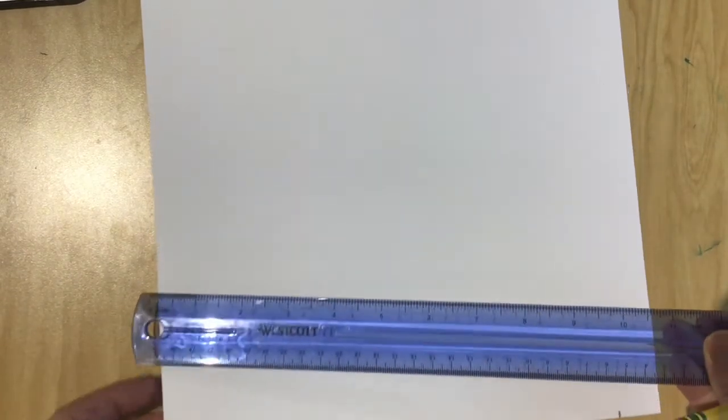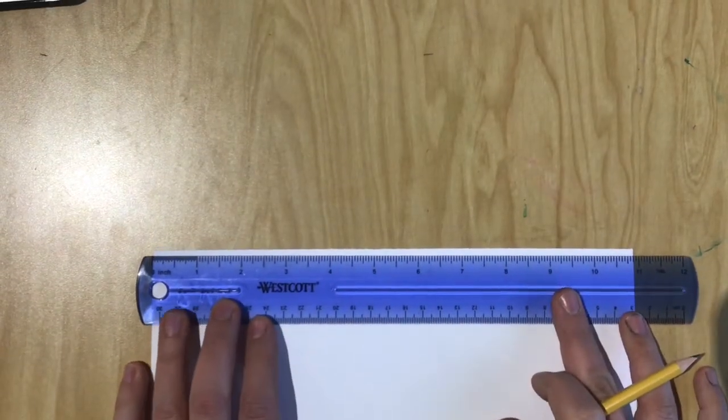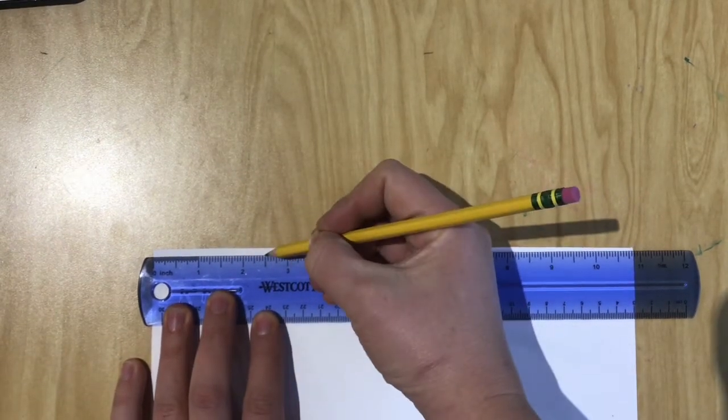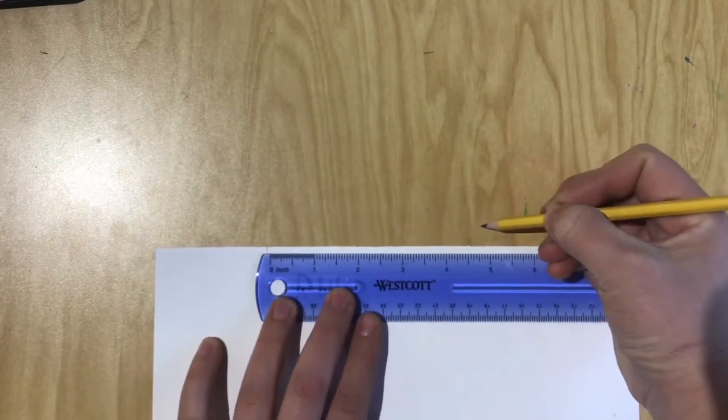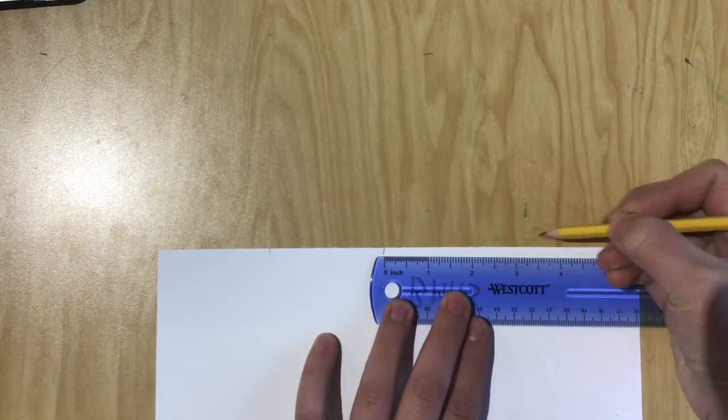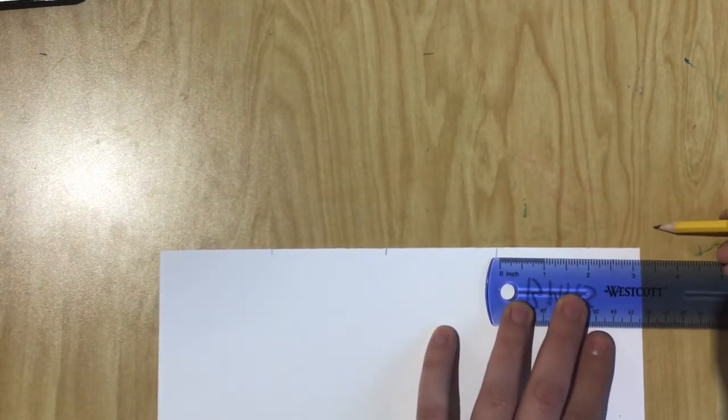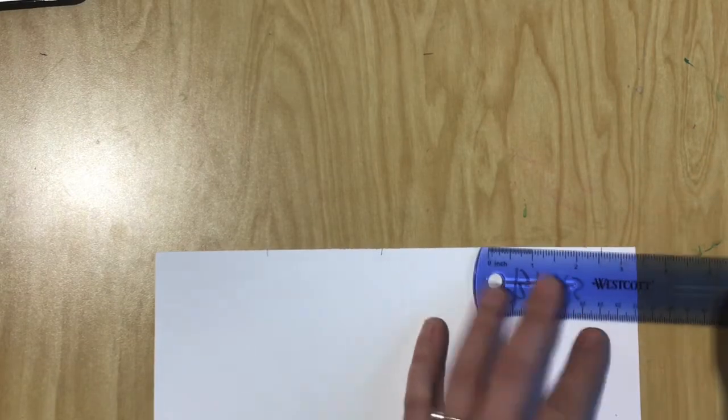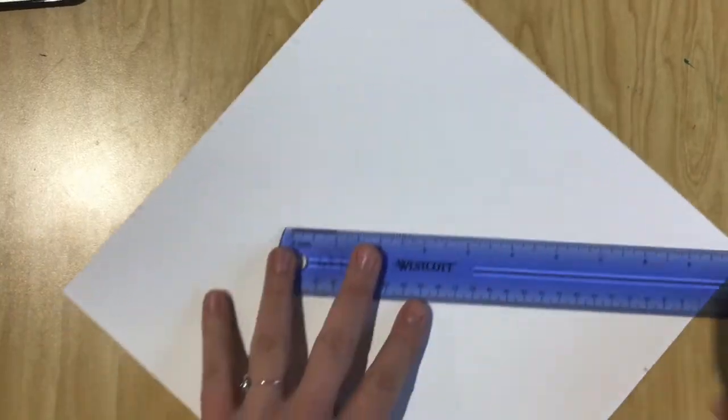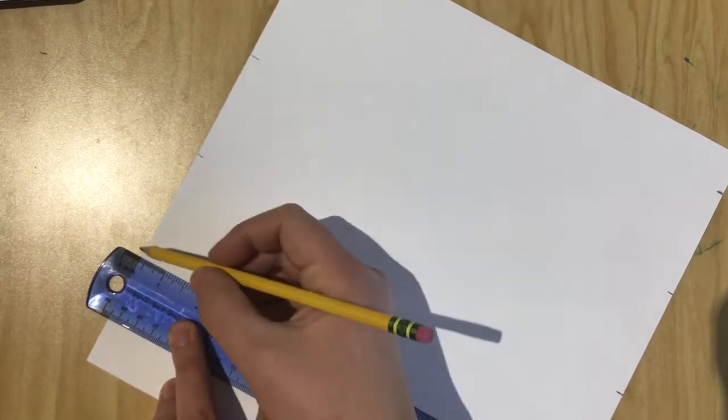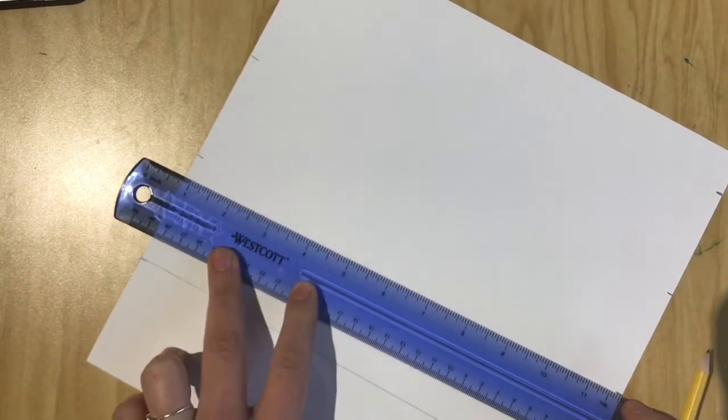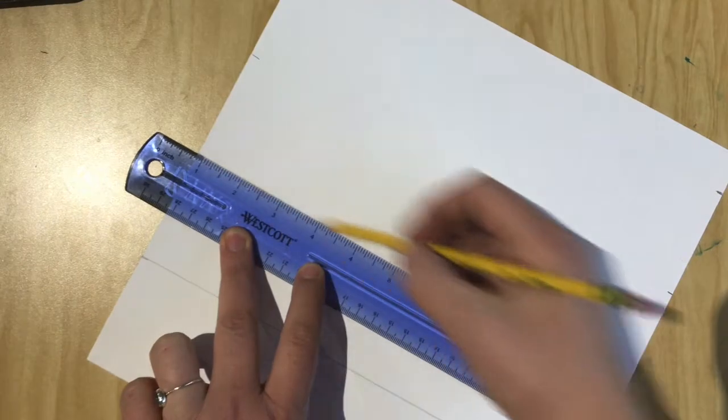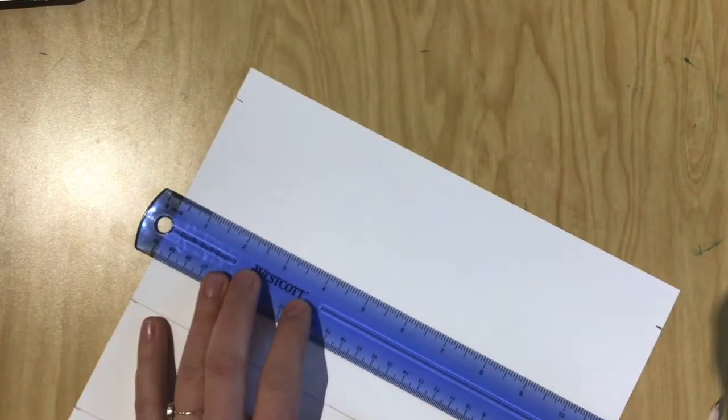Okay, so I'm going to scoot my ruler up to the top and make a line every 2½ inches again on the other side. And then I'm going to take my ruler, and I'm going to line it up with both notches and make a really light grid that's completely parallel.